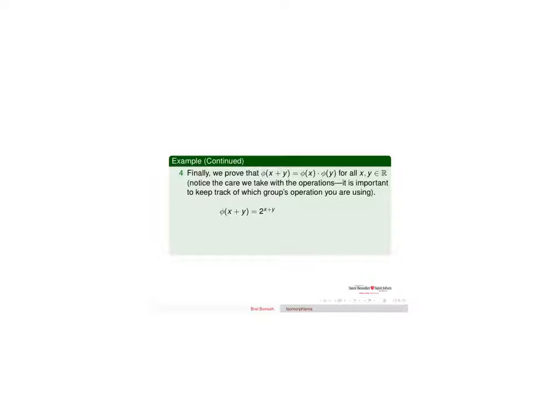Phi of x plus y is 2 to the x plus y. By exponent rules, that's 2 to the x times 2 to the y. So adding in the exponents means multiplying the base. That's phi of x times phi of y. And it preserves the operation, so the groups are isomorphic. Thanks.